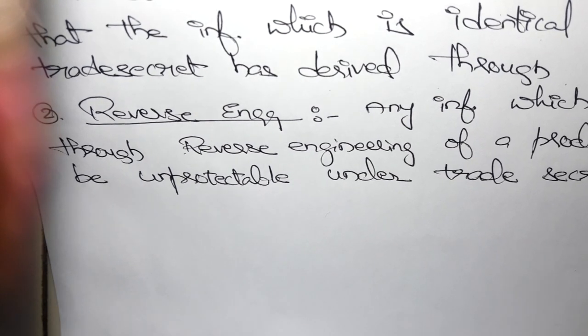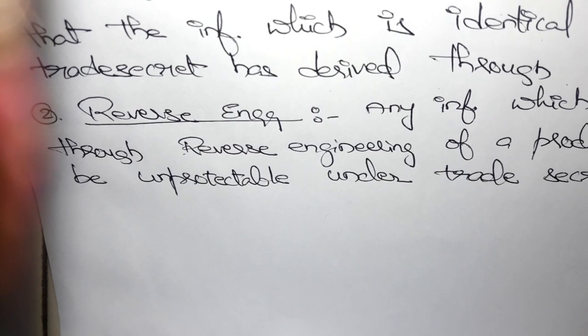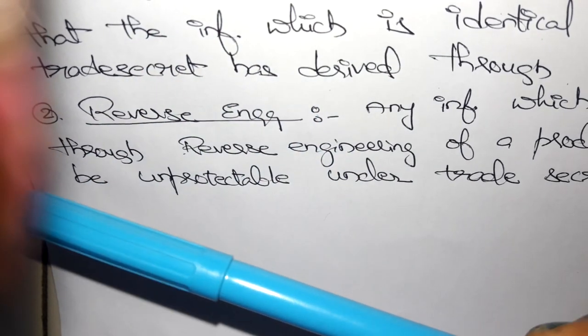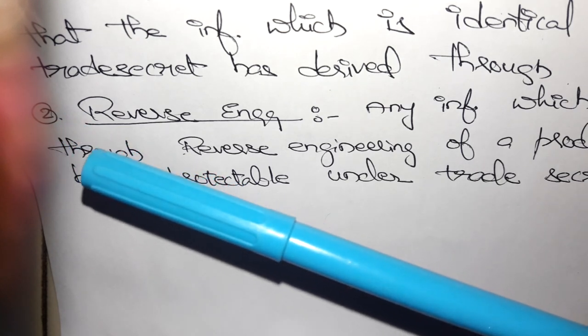Any information obtained through reverse engineering of your product will be unprotectable under trade secret. For example, by seeing this sketch pen, I prepared the same sketch pen by myself.